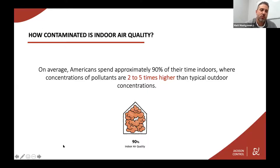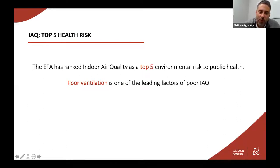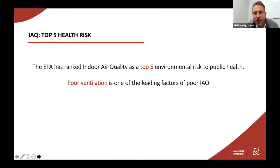In regards to the health risks for IAQ, the EPA has ranked indoor air quality as a top five environmental risk to public health. Poor ventilation is one of the leading factors of poor IAQ. The EPA also notes that indoor air quality concentrations of pollutants have increased in recent times due to energy-efficient buildings that lack mechanical ventilation for air changes, and increased use of synthetic building materials, furnishings, personal care products, pesticides, and household cleaners.